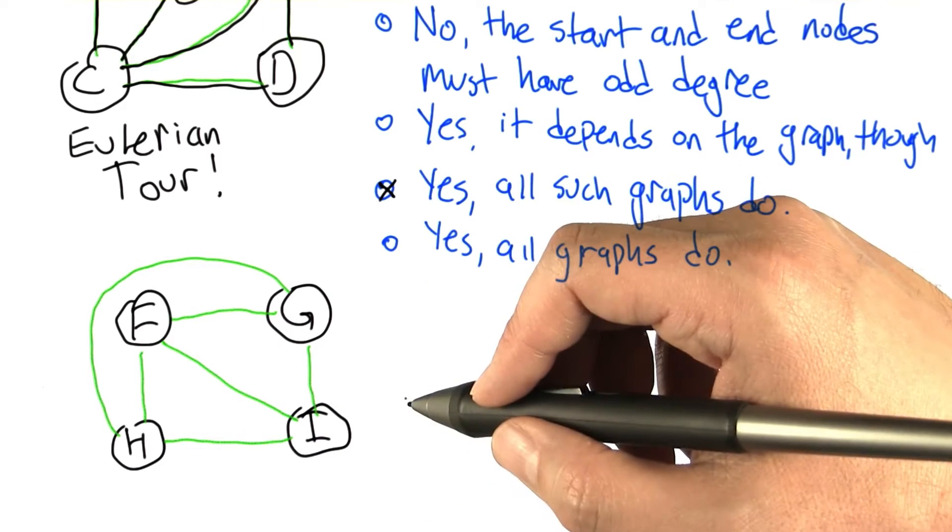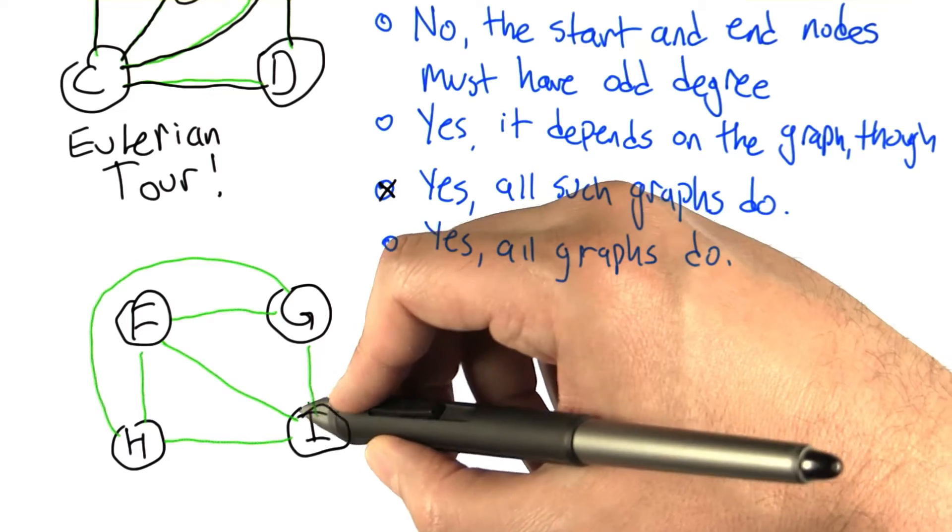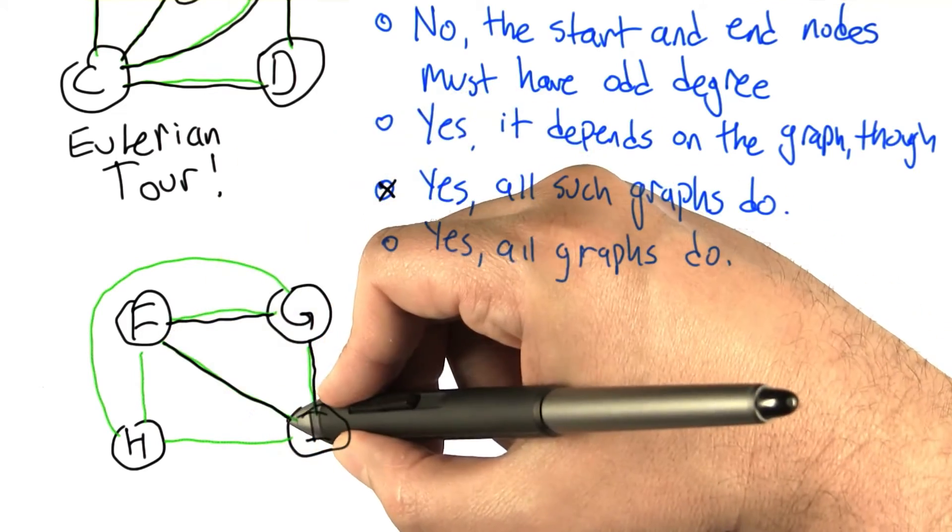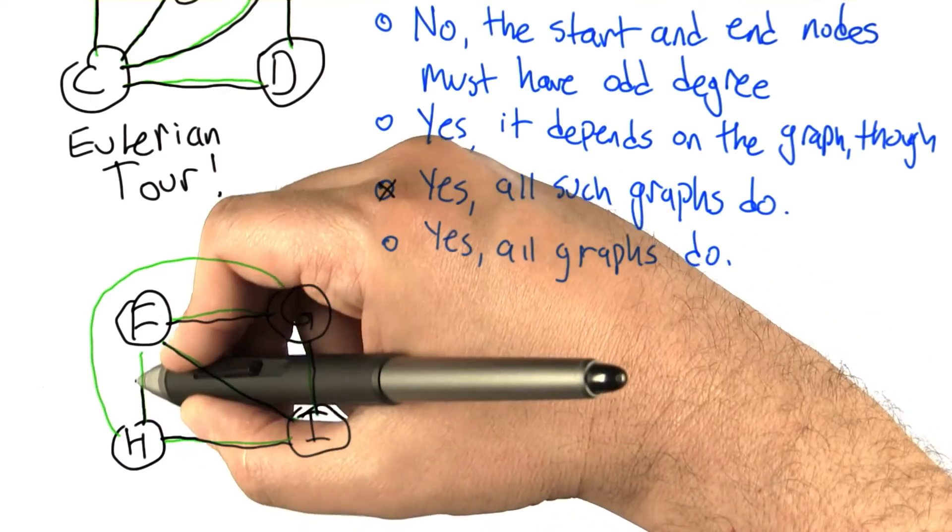All of them have a degree of 3. And let's see what happens when we try to make an Eulerian path. So we'll pick some node like I. We'll go I to G, G to F, F to I, I to H, H to F,